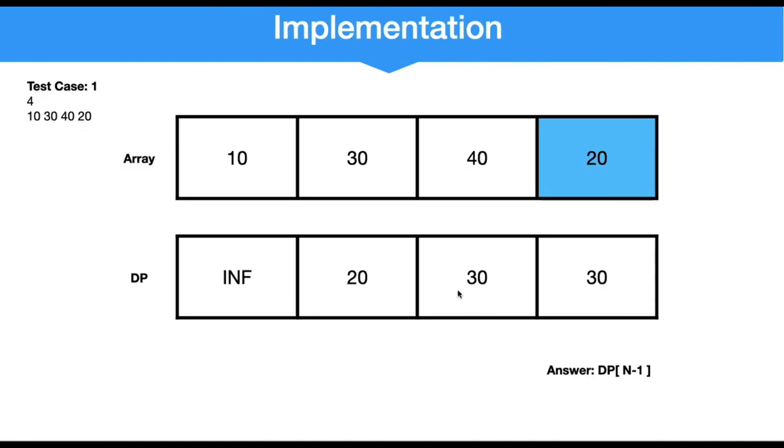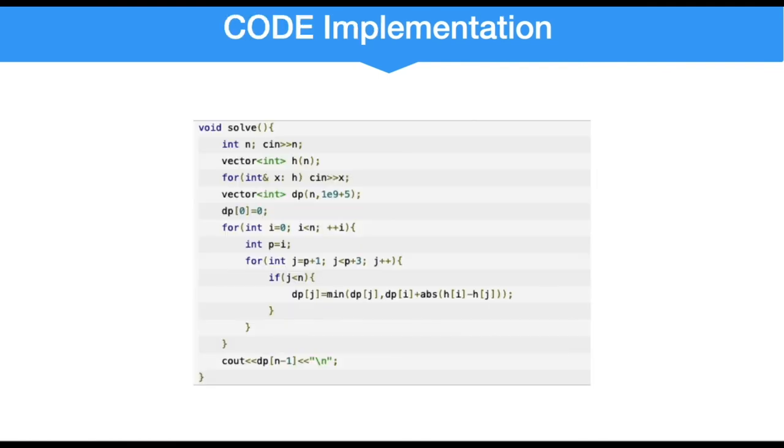So dp of j equals min of dp of j plus the difference of the heights. We need to take the minimum of these two, and that will be the cost at dp of j. Our solution will be dp of n minus 1. If we have kth position, then we can increment it like this: j less than p plus k plus 1, that is kth step we can take, and we can minimize it in the same way as we have done in this problem.